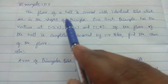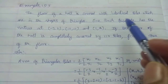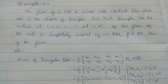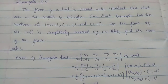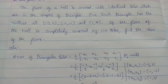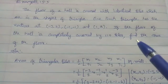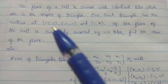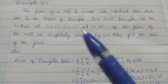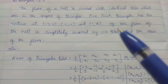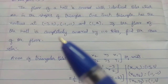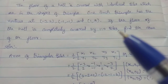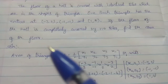Example 5.5: The floor of your hall is covered with identical tiles which are in the shape of a triangle. One such triangle has vertices at given coordinates. If the floor of the hall is completely covered by 100 tiles, find the area of the floor.